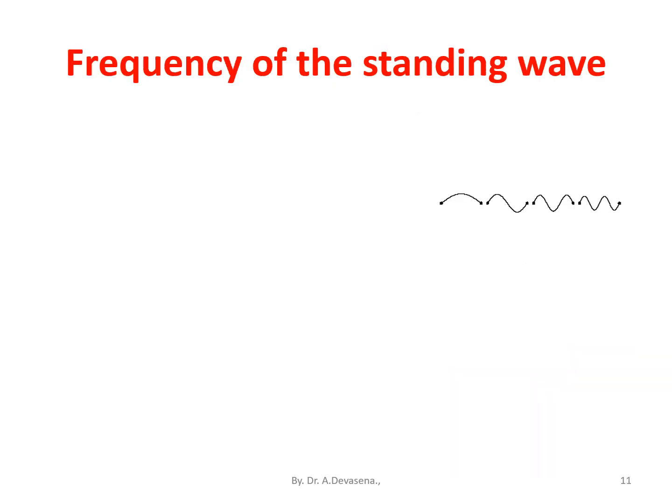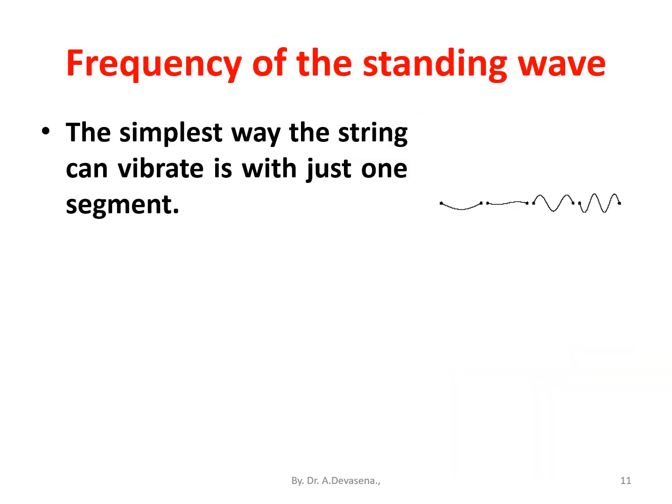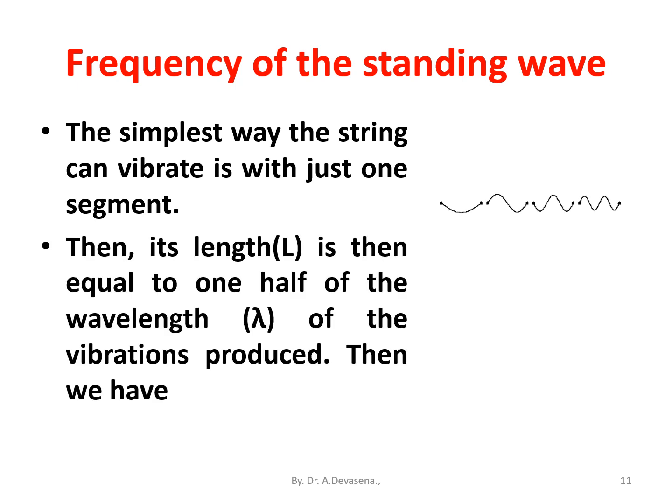Frequency of the standing wave: the simplest way the string can vibrate is with just one segment. Then its length L is equal to one half of the wavelength λ of the vibrations produced. Then we have L = 1 × λ/2, that is equal to λ/2.